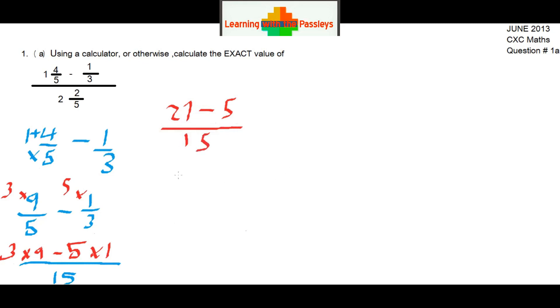Now 27 minus 5 gives us 22, and this should be over 15. So now we have one term for the numerator: 22/15.